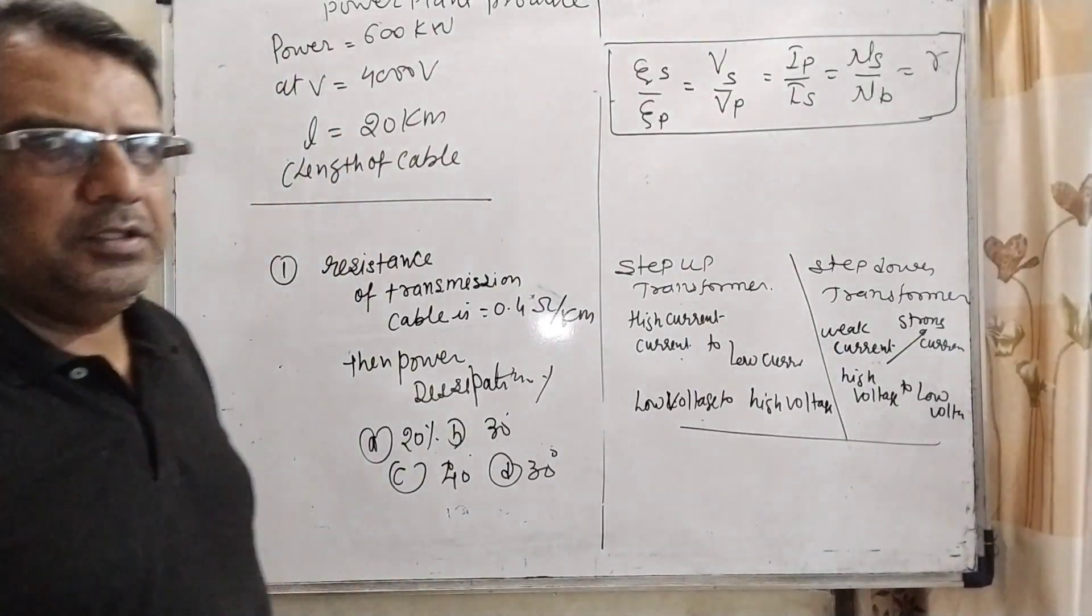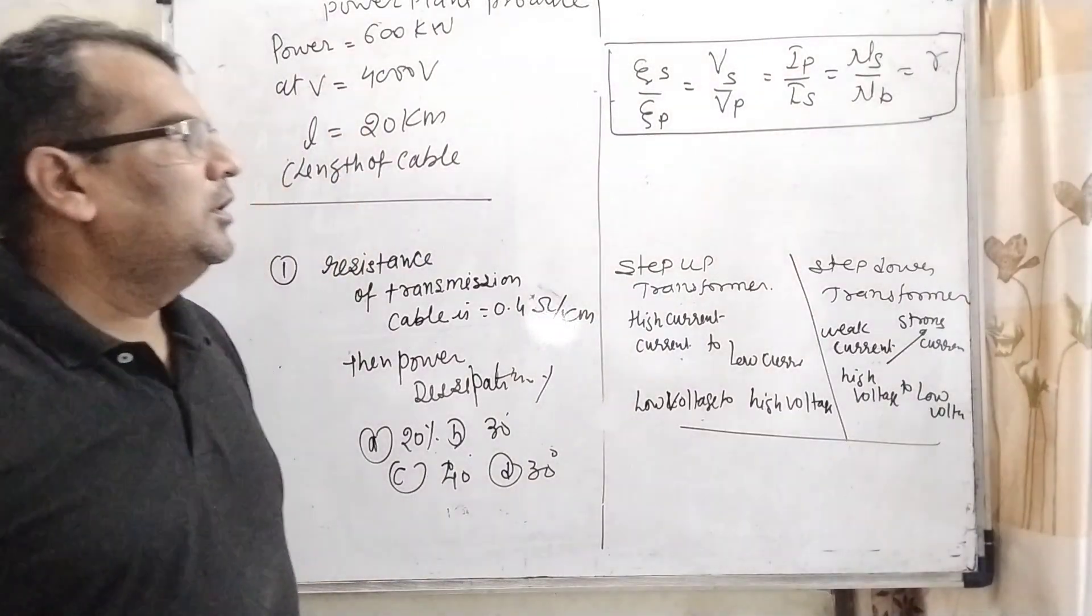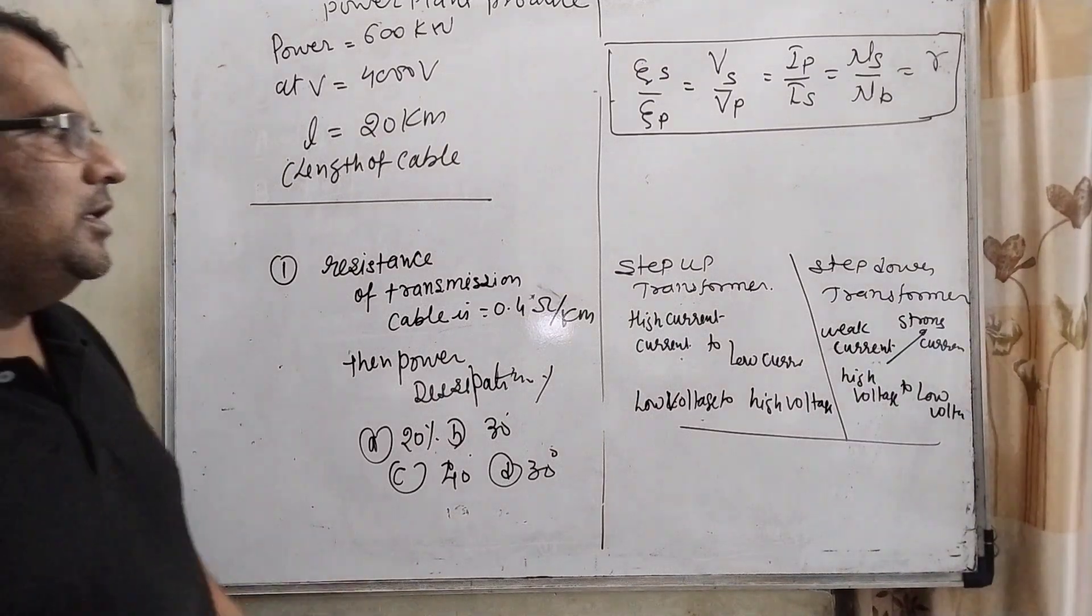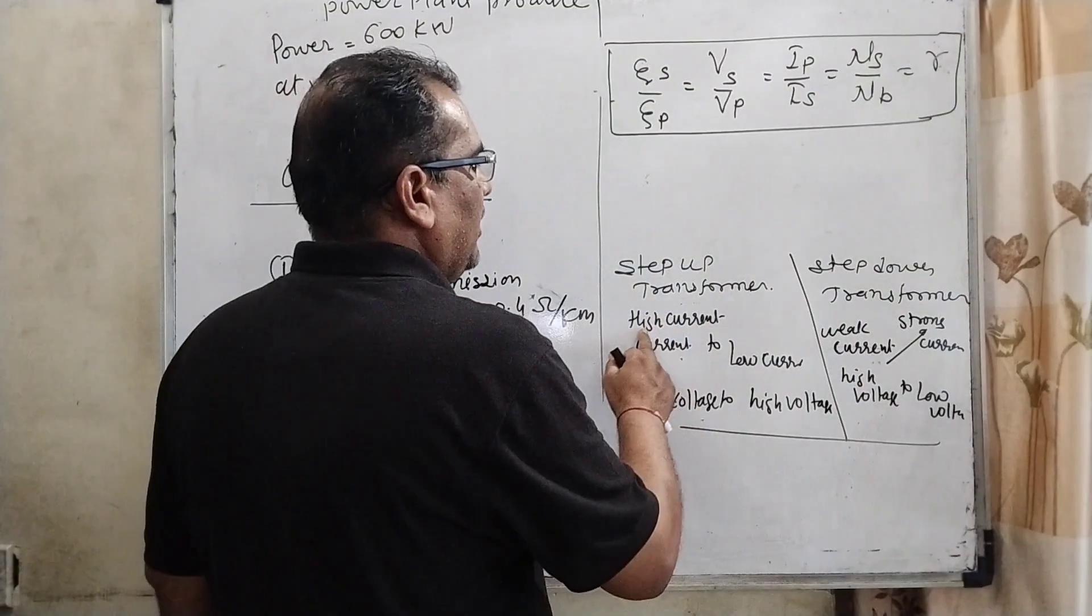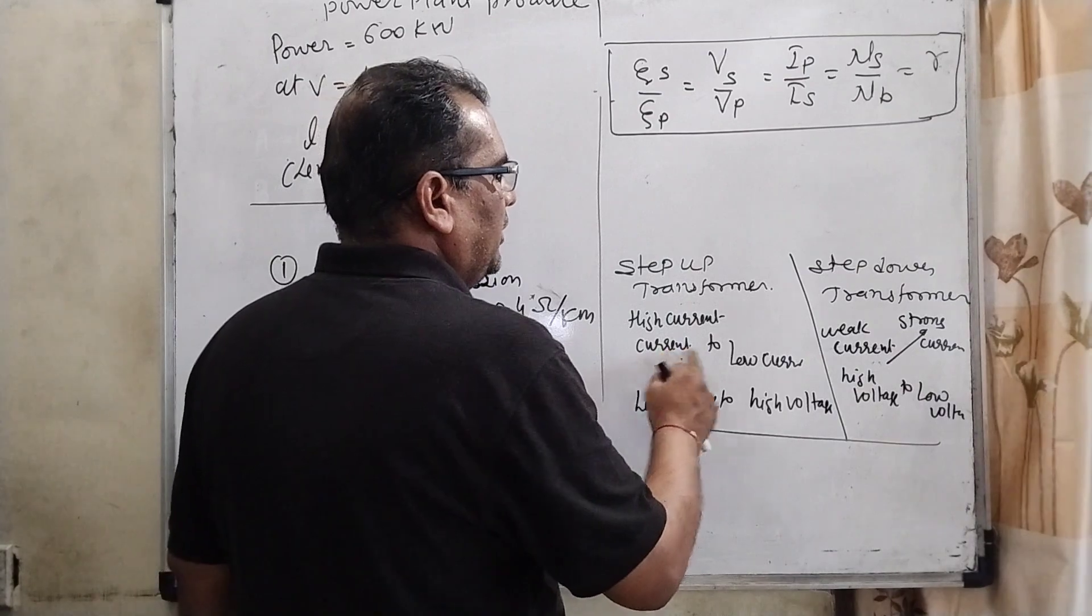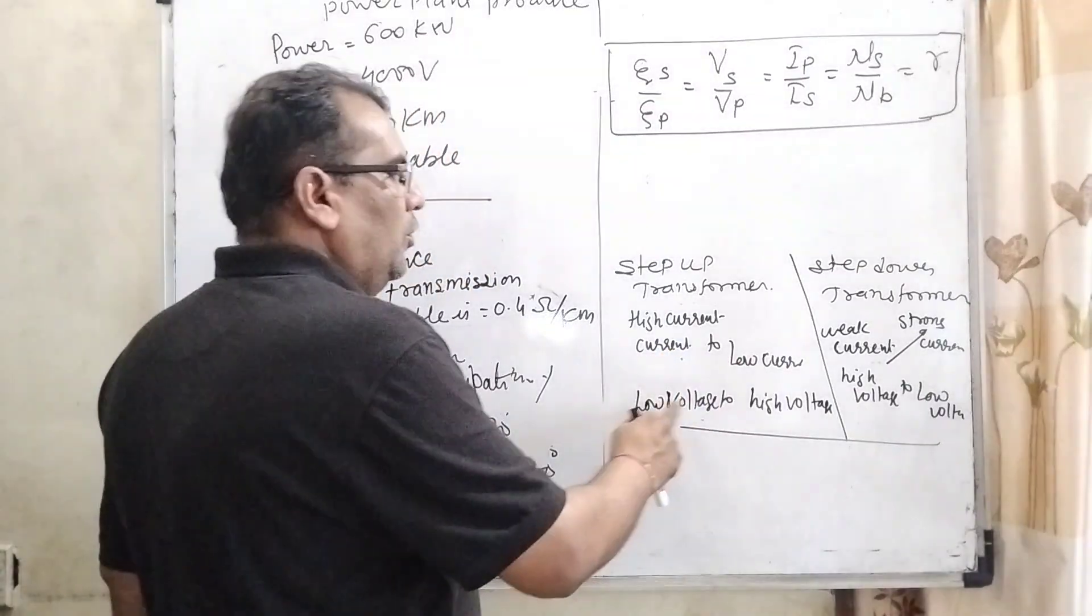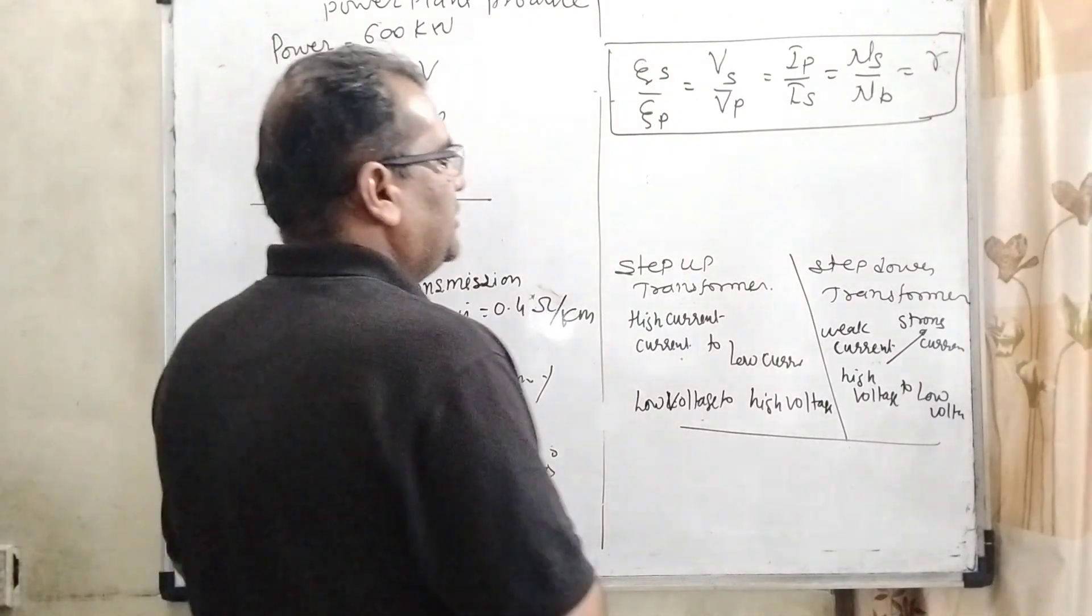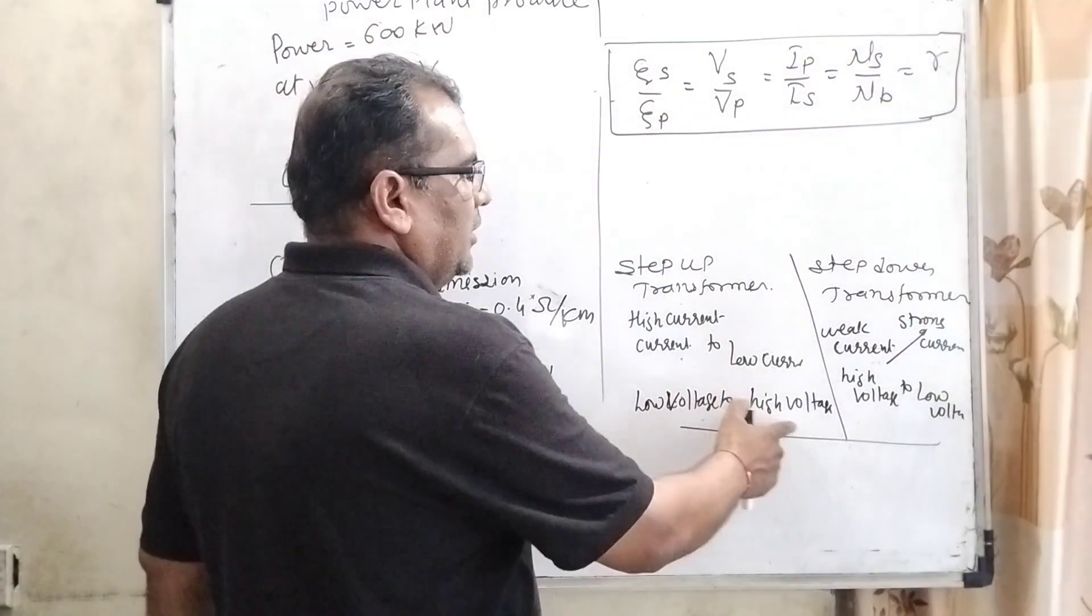Before starting the question, have a look to the concept of transformer. As we know that step up transformer having high current convert into low current and low voltage to high voltage. It is useful to where the electricity produce and to propagate to the grid.